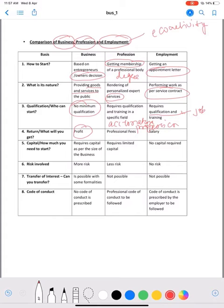Now, what will you earn? In business we get the profit. Professionals get fees, and employment gets salary. Now, how much capital is needed to start business, profession, and employment? According to the nature and size of the business, capital is required. A limited capital is required in profession.